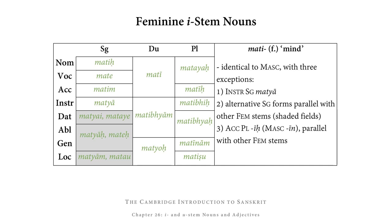In the dual, feminines are completely parallel to their masculine counterparts: mattyai, mattyā, mattyoḥ. In the plural, nominative-vocative mattyaḥ parallels agnayaḥ. Third exception: the accusative plural ends not in -īn but in -īḥ — compare masculine a-stems ending in -an versus feminine a-stems ending in -aḥ; here masculines have -īn and feminines have -īḥ. The rest of the plural is parallel to masculines: matibhiḥ, matibhyaḥ, matibhyaḥ, matīnām, and matiṣhu, again with su becoming shu due to the rooky rule.